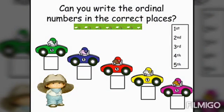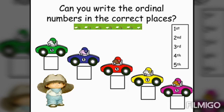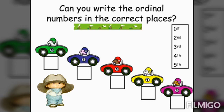We have here an example of ordinal numbers. The question is: can you write the ordinal numbers in the correct places? There are cars in the picture and ordinal numbers on the right side — we are going to name or place each car's position. The first car is yellow, the second is blue, the third is orange, the fourth is yellow, and the last car is in fifth place.